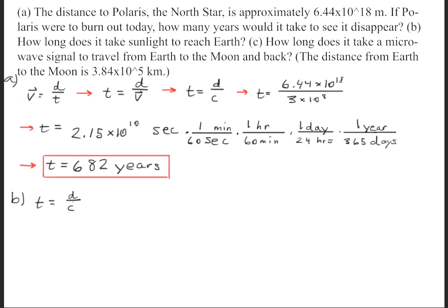Part B, once again, we're going to use the relationship that T is equal to the distance divided by the speed of light. Now, the distance from Earth to the Sun is 150 times 10 to the 9th meters. And then we'll take that number and divide it by 3 times 10 to the 8th meters per second.